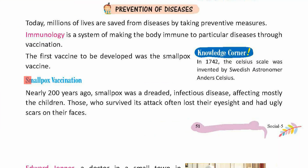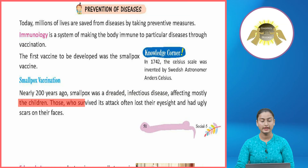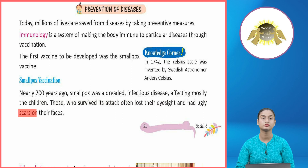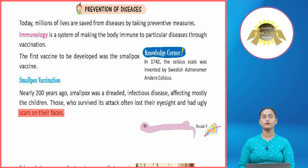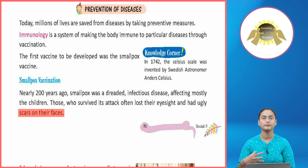Smallpox Vaccination: Nearly 200 years ago, smallpox was a dreaded infectious disease affecting mostly children. Those who survived its attack often lost their eyesight and had ugly scars on their faces.